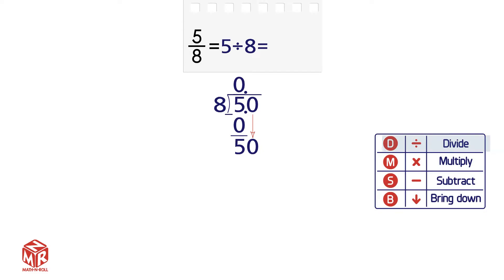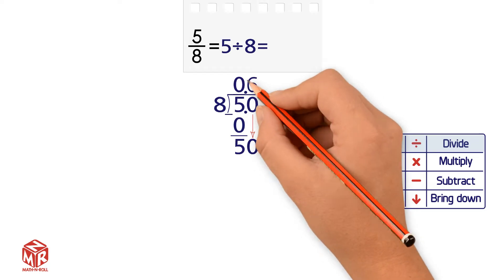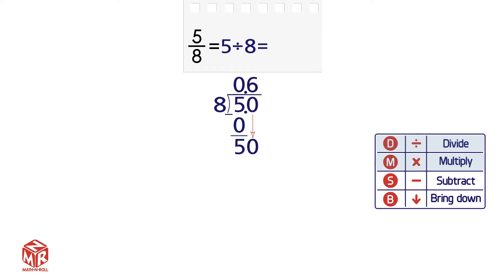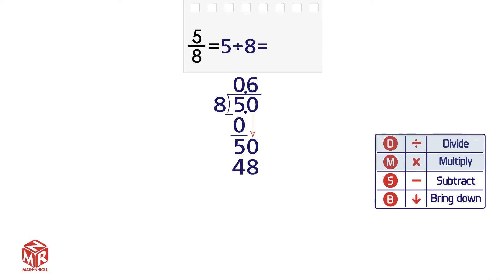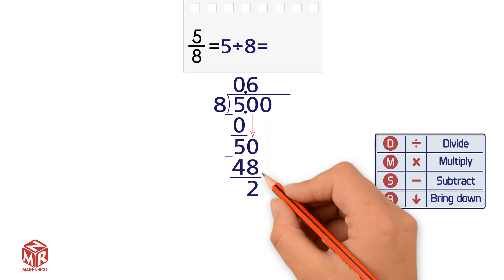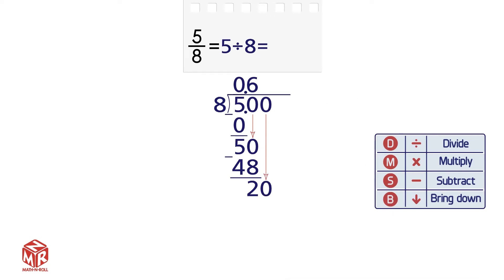Repeat the cycle. Step 1: Divide 50 by 8. How many 8's go into 50? 6. Step 2: Multiply. 8 times 6 equals 48, so we write 48 below the 50. Step 3: Subtract. 50 minus 48 equals 2. Step 4: Bring down. We have nothing to bring down, so we extend the problem by adding a 0. Now we bring down the 0. We have 20.